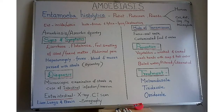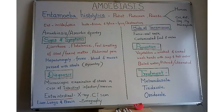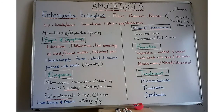Hepatomegaly, which is the enlargement of the liver, is another symptom. Other symptoms include fever, and in severe cases blood and mucus are also passed with the stools — this is called dysentery. Dysentery is intestinal inflammation, especially in the colon, that leads to severe diarrhea with mucus or blood in the stools.